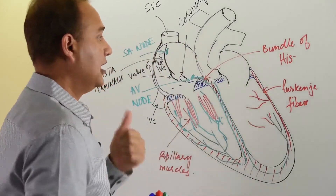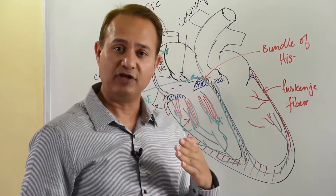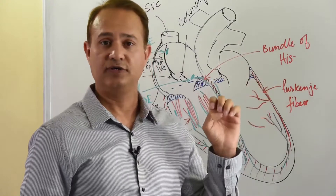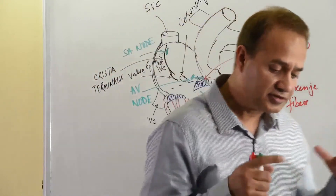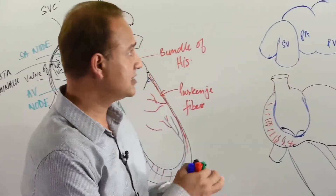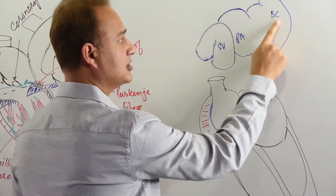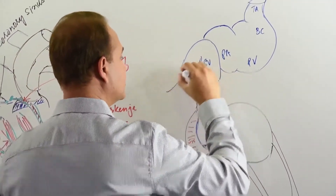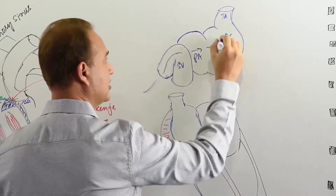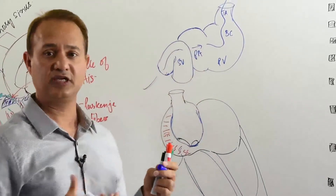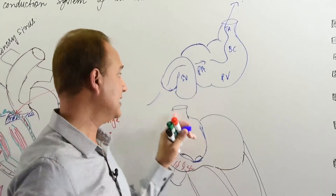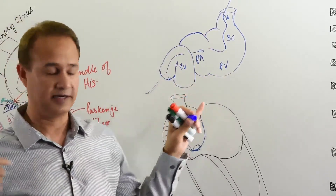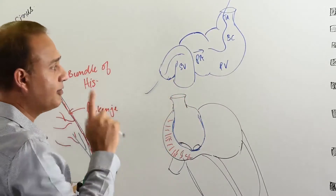Now let us see how all these structures develop. The SA node and AV node both develop from the sinus venosus. In the beginning, the heart tube consists of: truncus arteriosus, bulbus cordis, primitive ventricle, primitive atria, and sinus venosus. Blood flows into the sinus venosus, then to the primitive atria, and out. The pulsation is from caudal to cephalic end.